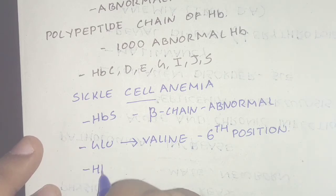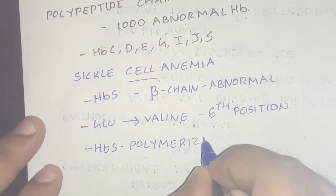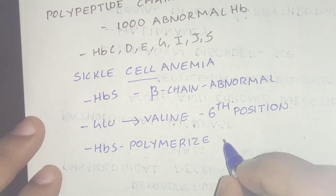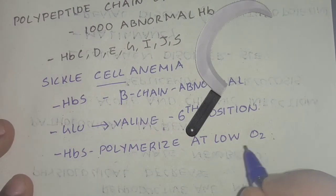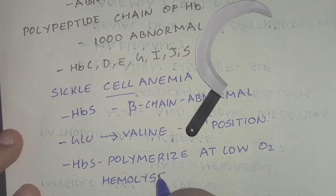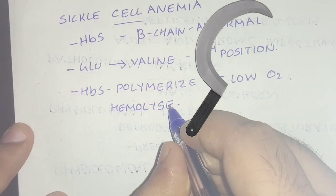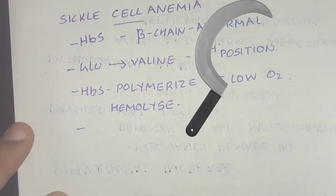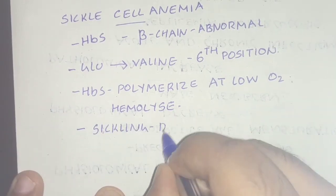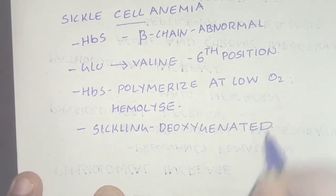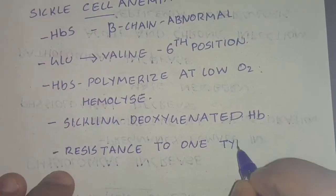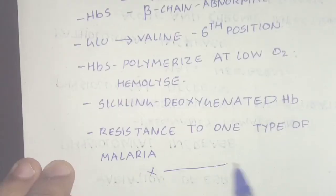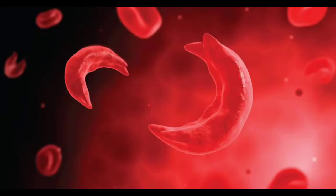HbS polymerizes at low oxygen tension, causing the cells to become sickle-shaped, increasing hemolysis. Sickling occurs in deoxygenated hemoglobin. The sickle gene confers resistance to a type of malaria, and sickle cell anemia is common in the Black population of Africa.